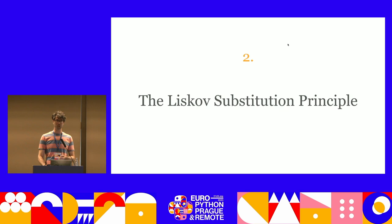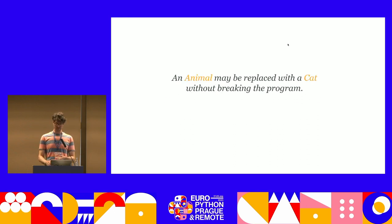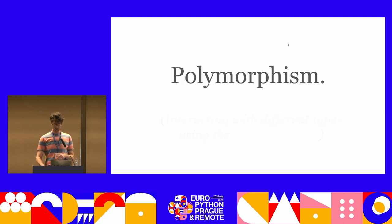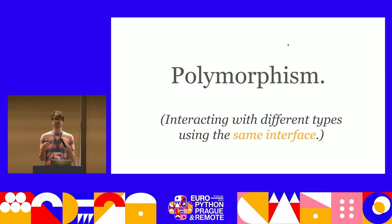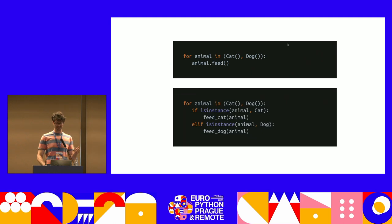In order to understand the problem, we need to talk about the Liskov substitution principle: an object may be replaced with a sub-object without breaking the program. In our case, an animal may be replaced with a cat without breaking the program. Why is this a useful principle? Polymorphism — interacting with different types using the same interface. Your code might interact with an object without knowing the exact type; it just knows the interface. This allows you to loop through a cat and a dog and call feed on them without type-checking each one. This is polymorphic code, and polymorphism is a very good thing that opens up lots of nice patterns.